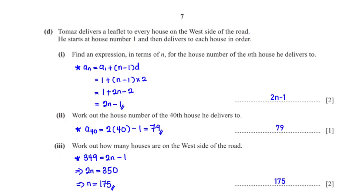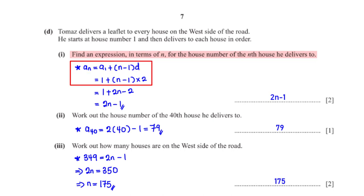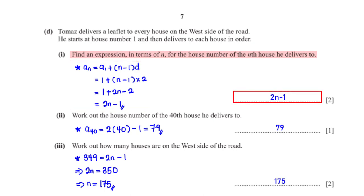Thomas delivers a leaflet to every house on the west side, starting at house 1 in order. Find an expression in terms of n for the house number of the nth house he delivers to. The house numbers form an arithmetic sequence with first term a₁ equal to 1 and common difference d equal to 2. Expanding gives 2n minus 2 plus 1, so the nth term is 2n minus 1.